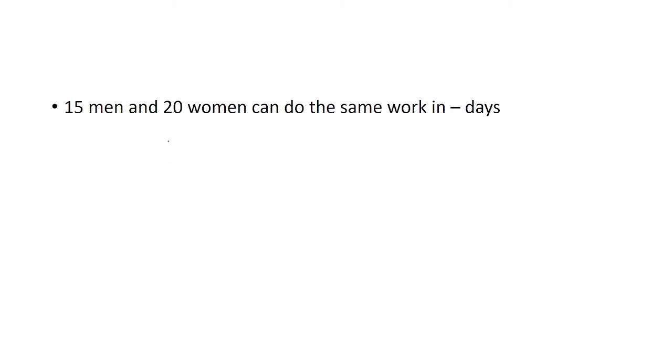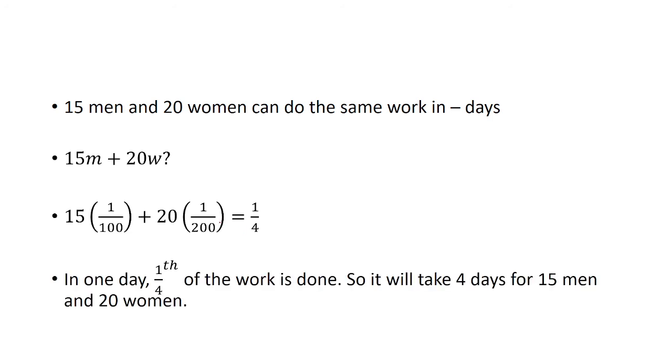And now we want to look for how much work or how many days it takes for 15 men and 20 women to do the same work. That's another way of saying what is 15m plus 20w? Well, m we said was 1 over 100, w was 1 over 200, and we get 1 fourth when we plug it in. So this means that in one day, 1 fourth of the work is done. So it will take 4 days for 15 men and 20 women to do the same work.